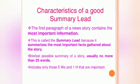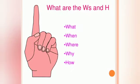Characteristics of a good summary lead: the first paragraph of a news story contains the most important information. This is called the summary lead because it summarizes the most important facts gathered about the story. The five W's and one H are: What, When, Where, Why, Who, and How — these are the main facts we need to know.